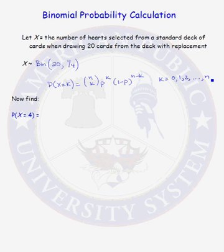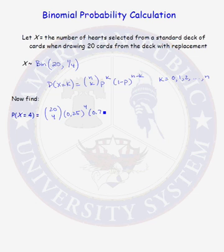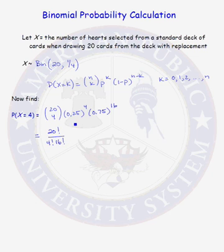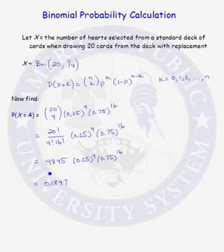This is non-zero for values of K equal to 0, 1, 2, up to N. So the probability that X equals 4 is 20 choose 4, times 0.25 raised to the fourth power, times 0.75 raised to the 16th power — 4 successes and 16 failures. Recall that 20 choose 4 equals 20 factorial divided by 4 factorial times 16 factorial, which equals 4,845. So the probability that X equals 4, that we get 4 hearts when selecting 20 cards, is almost 19%.